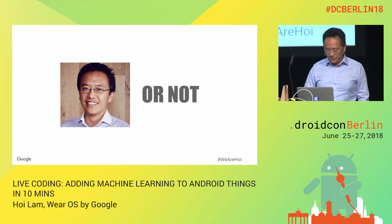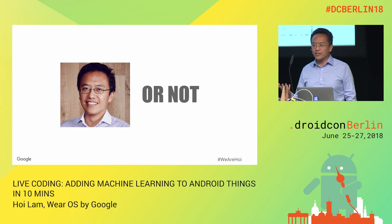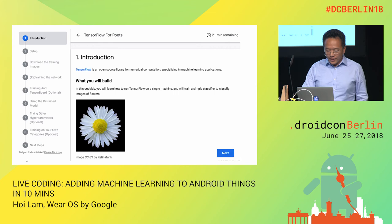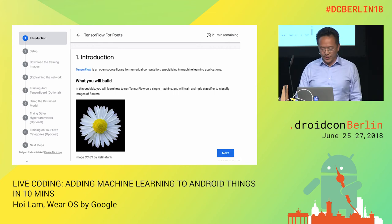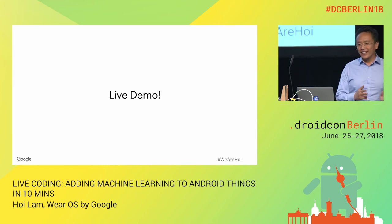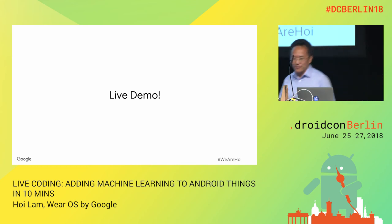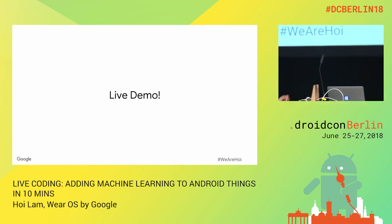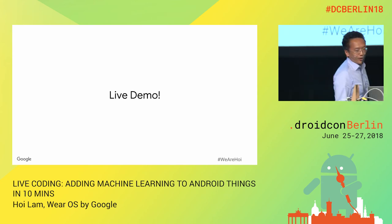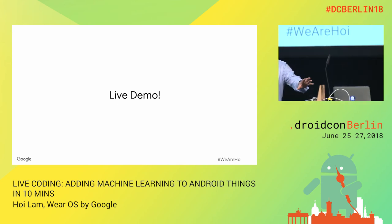I went to TensorFlow for Poets — the colab about classifying different types of flowers — and put my face into it. Live demo: I have three brave volunteers. The model says I'm 99% hoi.